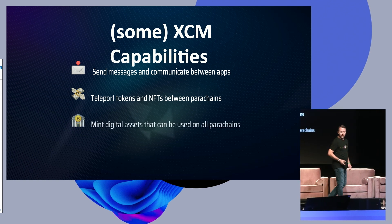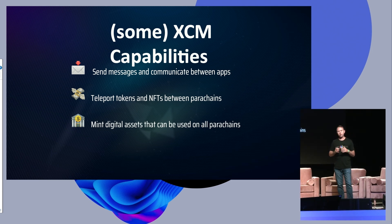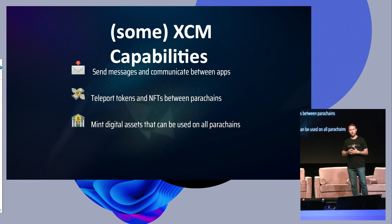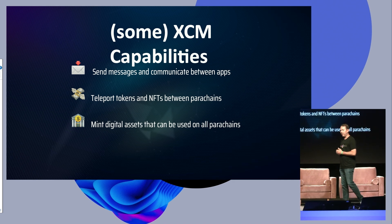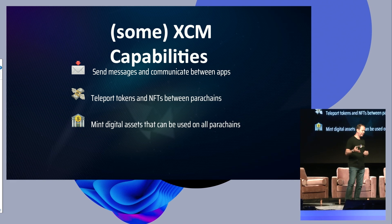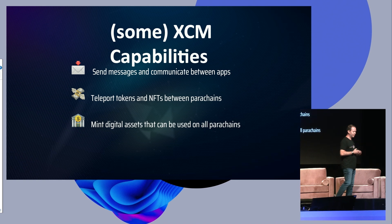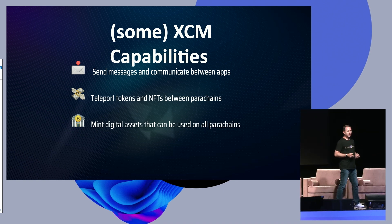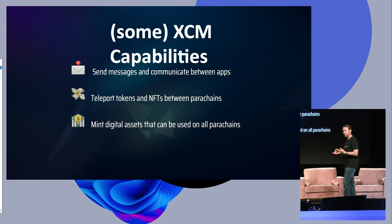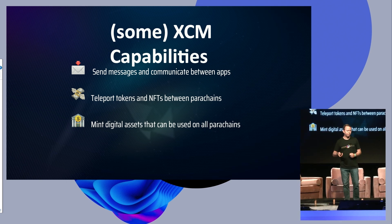We can mint digital assets on one parachain and use them on all the parachains. We see parachains like Acala doing this today with AUSD, and others like Bifrost with their VKSM product. We see Lido doing this with staked KSM and staked DOT, which are liquid staked representations of these tokens. This is a new capability that doesn't exist in other layer ones or layer zeros, and it's very powerful — it really drew us to Polkadot as well.